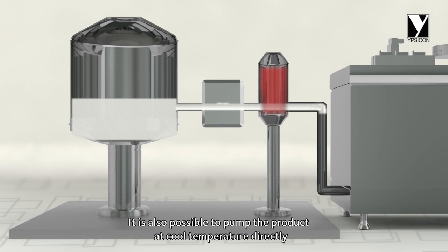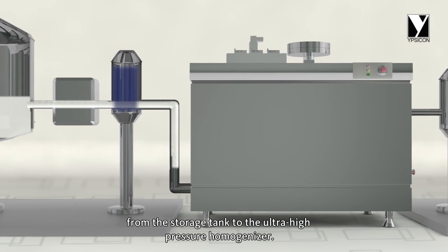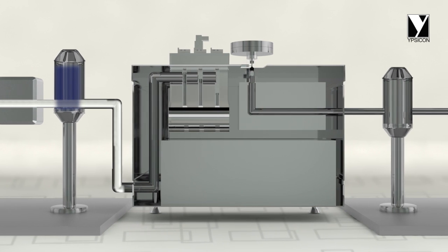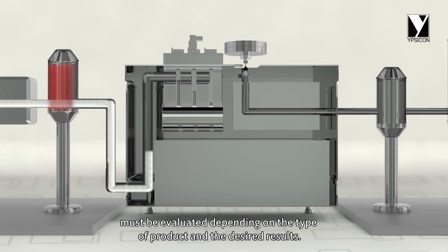It is also possible to pump the product at cool temperature directly from the storage tank to the ultra-high pressure homogenizer. The parameters of inlet temperature, pressure and outlet temperature must be evaluated depending on the type of product and the desired results.